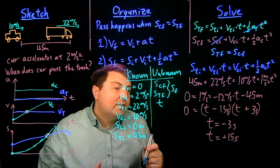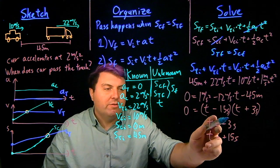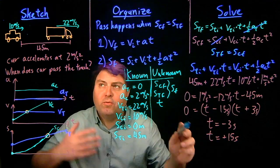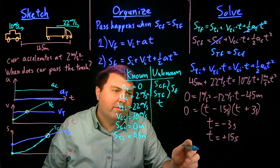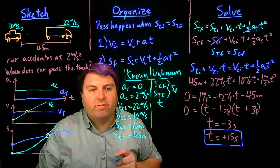Well, T equals plus 15 seconds is much more physically reasonable than T equals negative 3 seconds. This would have happened before the car entered the on-ramp. So this is my final answer.